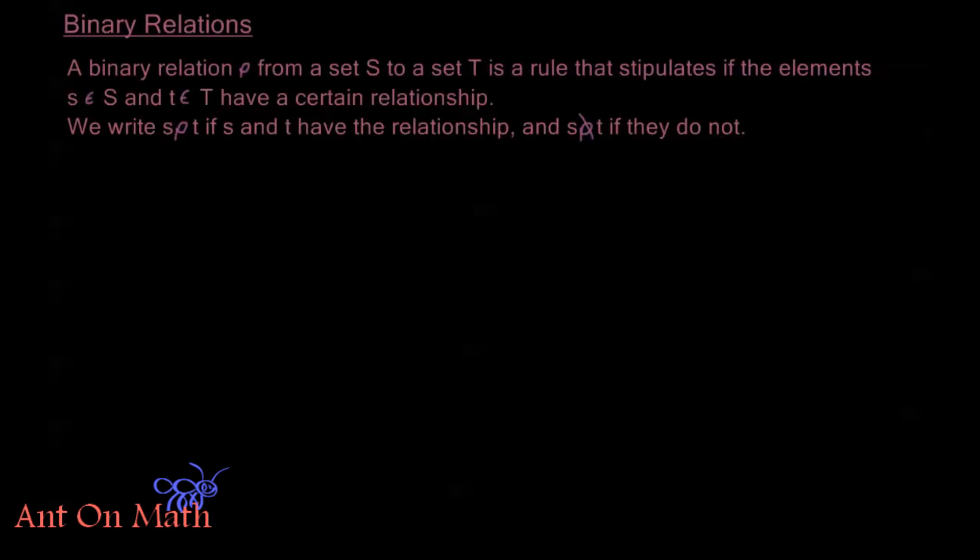Now a binary relation is called a binary relation because it's going to be a relation between two elements, and it's going to be either true or false. Now a binary relation, rho, this is the Greek letter rho, I'll be using rho a lot to talk about relations. From a set S to a set T is a rule that stipulates if the elements s∈S and t∈T have a certain relationship.